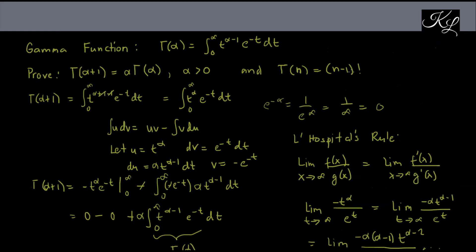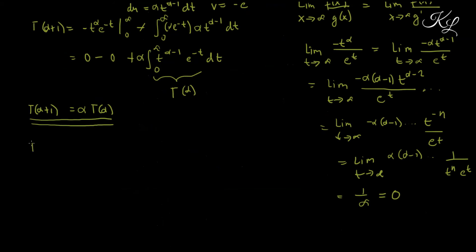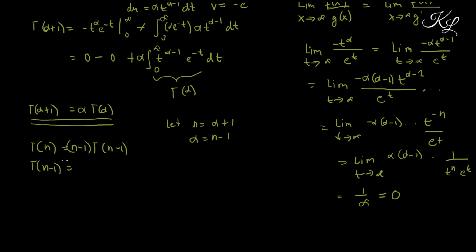Now let's prove the other identity: Γ(n) = (n−1)!. Let n = α+1, so α = n−1. Applying the first identity, Γ(n) = (n−1)·Γ(n−1). Similarly, Γ(n−1) = (n−2)·Γ(n−2), and Γ(n−2) = (n−3)·Γ(n−3), and so on.